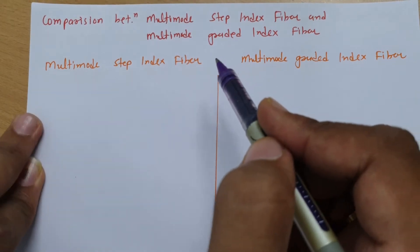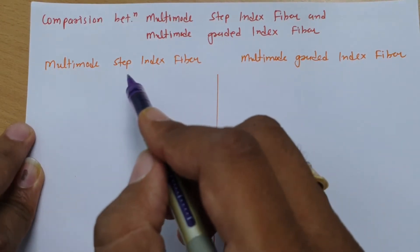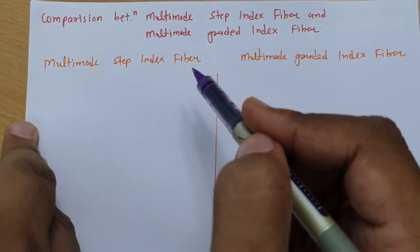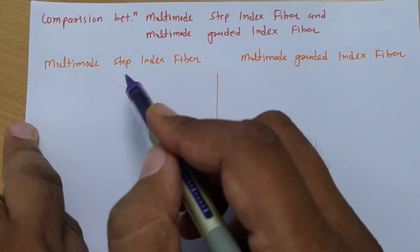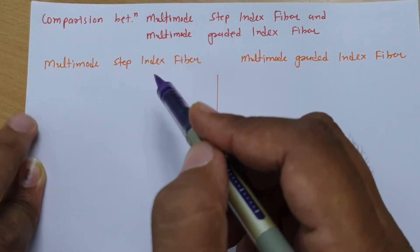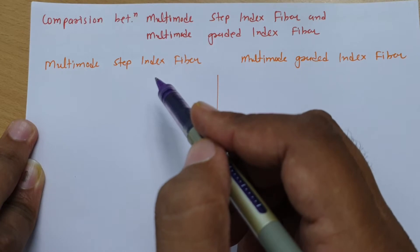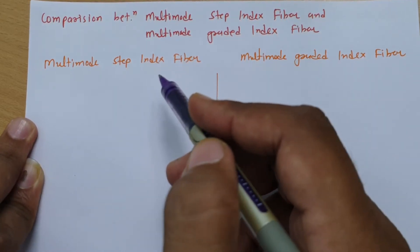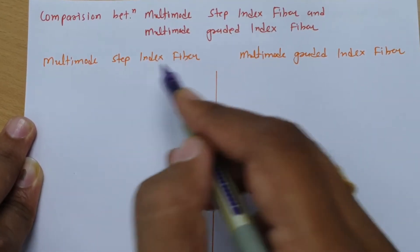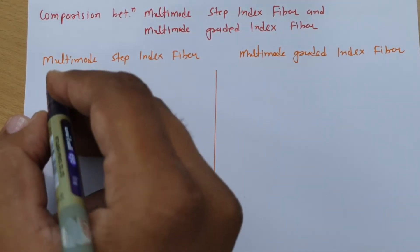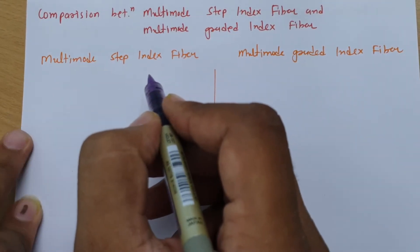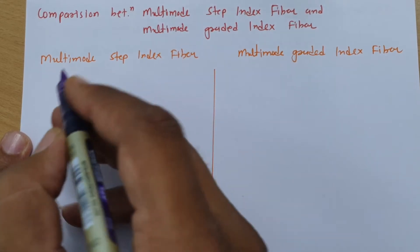As we know in Step Index Fibre, the index will change directly from Core to Cladding as a step. So there is a step change in index from Core to Cladding for Step Index Fibre. In Multi-mode Step Index Fibre, the index will also change as a step.